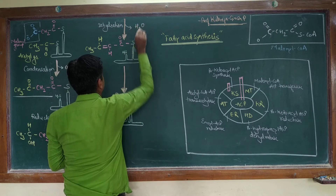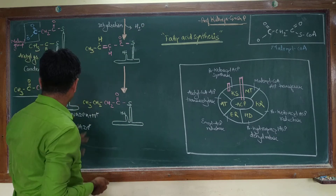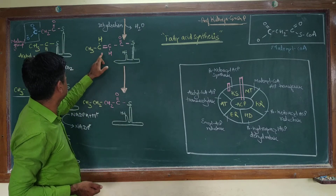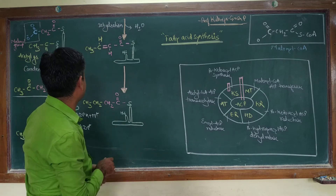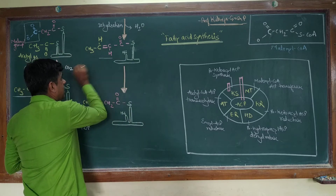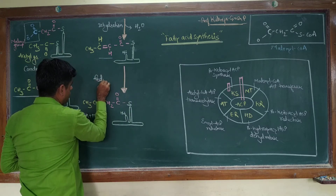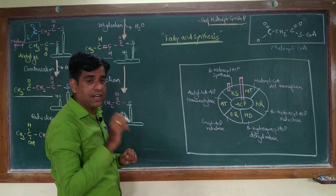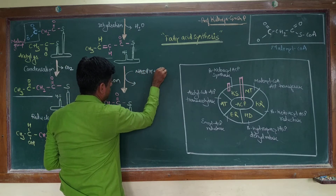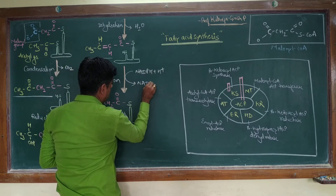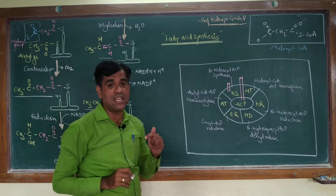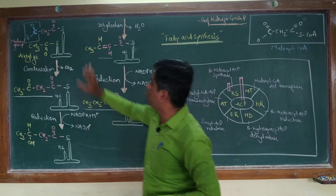This hydroxyl group then undergoes dehydration — a water molecule is removed, introducing a double bond. The OH and H form H2O which is removed, giving a trans Δ2 enoyl-CoA-type intermediate. This double bond is then reduced in the next step, again with reducing equivalents provided by NADPH + H⁺, yielding a saturated butyryl group that has increased by two carbon atoms.